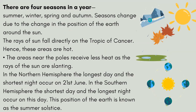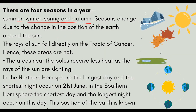Now there are four seasons: summer, winter, spring, and autumn. You can also see it as summer, winter, autumn, and rainy season — you can consider rainy season as spring.